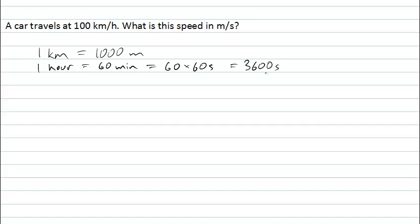How does this help us convert from kilometres per hour to metres per second? We can write our quantity down, 100 km per hour, and we can use the symbols for the units essentially as algebraic symbols. And we want to cancel out the ones we have, kilometres and hours, and be left with the units we're looking for, in this case metres per second.